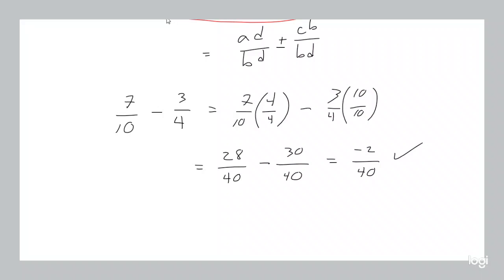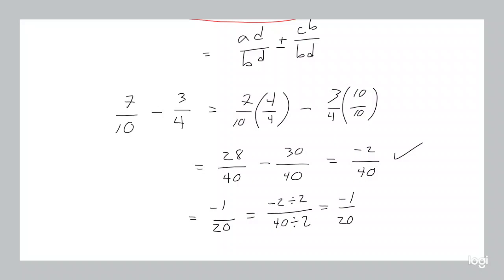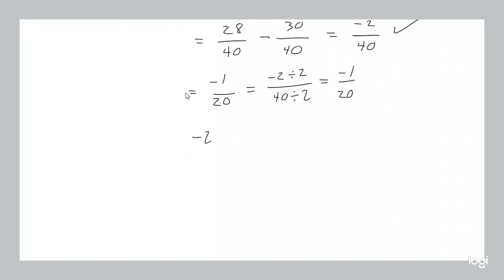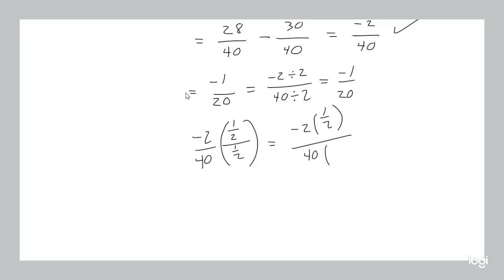So 28 minus 30 is negative 2 divided by 40. Now you might think, oh well we can actually reduce that — to negative 1 over 20. And you're right, that is negative 1 over 20. You might say, oh well I know that I can divide the top and the bottom by the same thing. Well, we're multiplying the top and bottom by a special form of 1. Dividing the top and the bottom by the same thing is the same process, because all division is just multiplying by 1 over the thing you're dividing by. So negative 2 times 1/2 divided by 40 times 1/2 gives us negative 1 over 20.